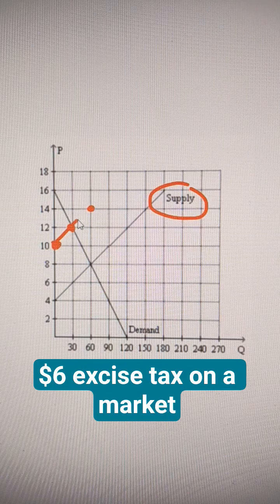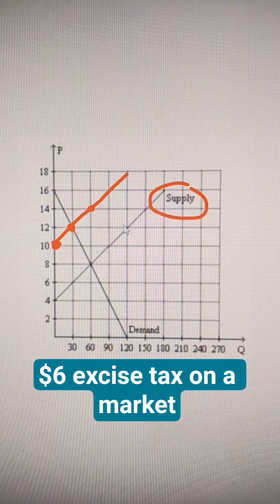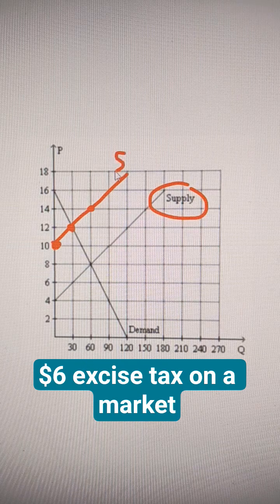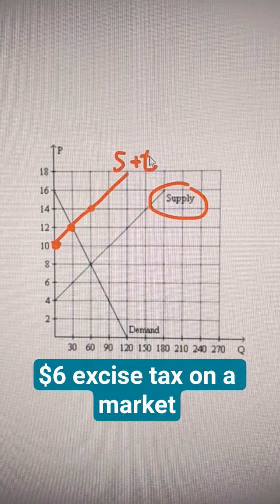So this orange line that we're drawing here, same linear fashion of our supply curve. This is S plus tax. In this case it's $6.